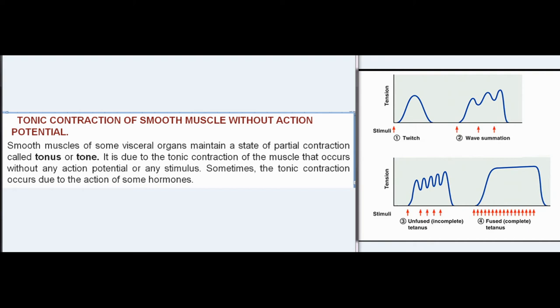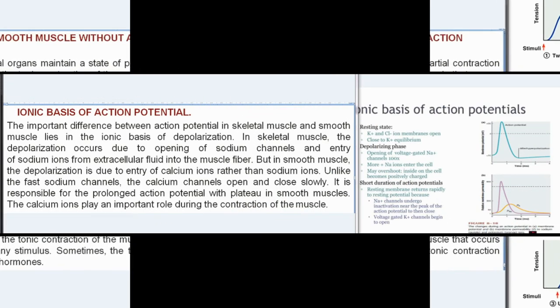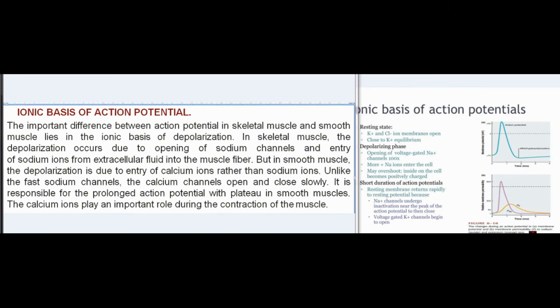Tonic contraction of smooth muscle without action potential: smooth muscles of some visceral organs maintain a state of partial contraction called tonus or tone. It is due to tonic contraction of the muscle that occurs without any action potential or any stimulus. Sometimes, the tonic contraction occurs due to the action of some hormones. Ionic basis of action potential: the important difference between action potential in skeletal muscle and smooth muscle lies in the ionic basis of depolarization.